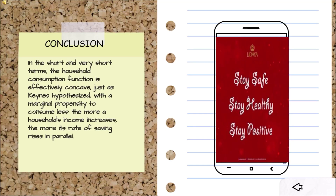It is clear that consumption increases with the rise in the level of income. The consumption function states the various amounts of consumption expenditure corresponding to different levels of income. Keynes hypothesized that the marginal propensity to consume is less than one, so as household income increases, the rate of saving also rises proportionally.